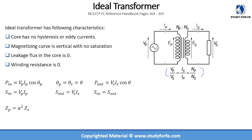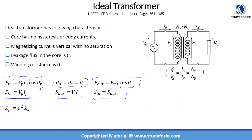For an ideal transformer, input real power equals V_p times I_p times cosine(θ_p). Since the primary and secondary power factor angles are the same, P_out equals V_s times I_s times cosine(θ). Similarly, apparent input power equals V_p times I_p, and apparent output power equals V_s times I_s. S_in equals S_out because efficiency is 100% — there are no losses.